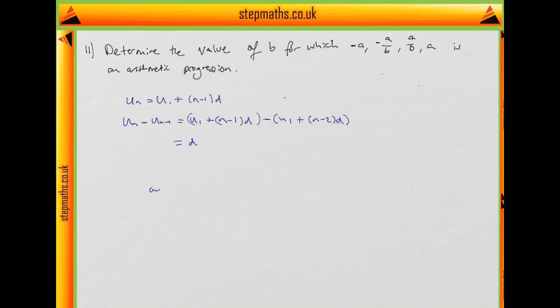So we require minus a over b minus minus a to be equal to a over b minus minus a over b.